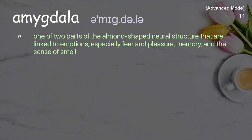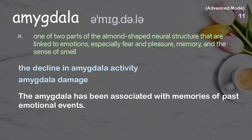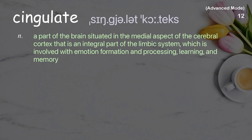Amygdala. One of two parts of the almond-shaped neural structure that are linked to emotions, especially fear and pleasure, memory, and the sense of smell. Examples: The decline in amygdala activity. Amygdala damage. The amygdala is an integral part of the limbic system, which is involved with emotion formation and processing, learning, and memory.